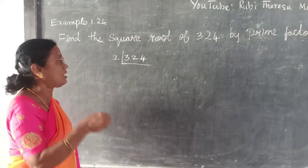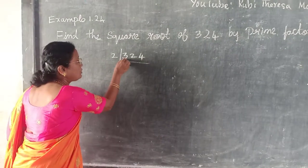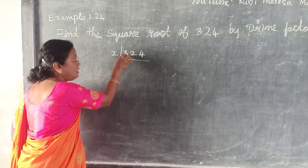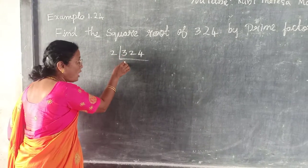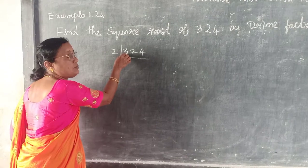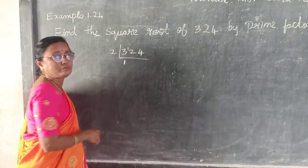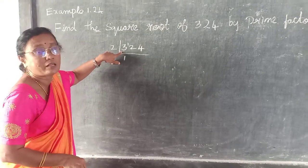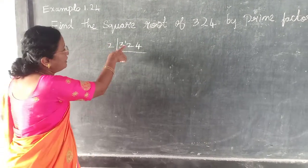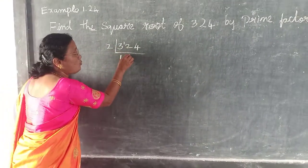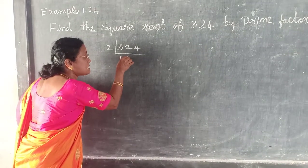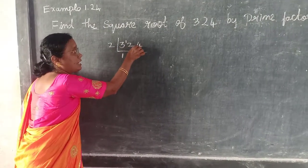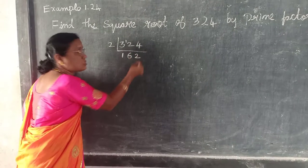You have to recall the additional information. 2 goes into 324: the remainder is 1, so that is 12. 12 means how many 2's — 6 2's are 12. Again 4 — 2 2's are 4.